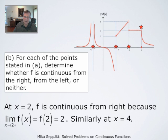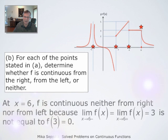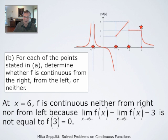At x = 6, the function has both right and left-hand limits, and they are both 3. Therefore the function has a limit at that point. But the limit is different from the value of the function. Therefore the function is neither right nor left continuous at x = 6.